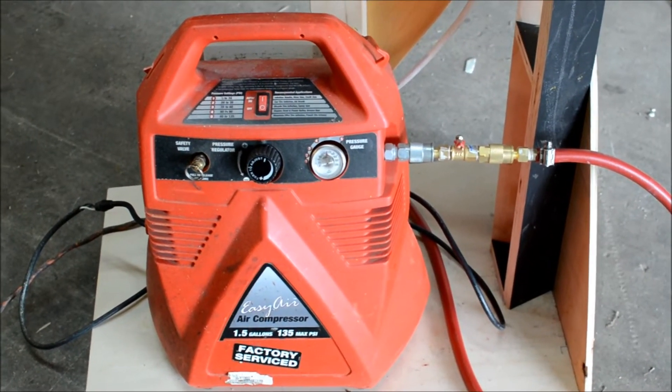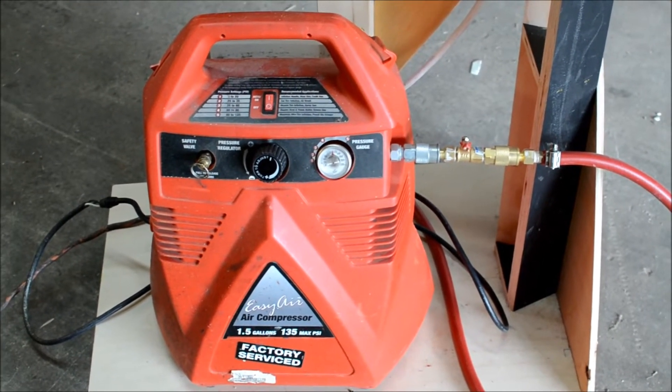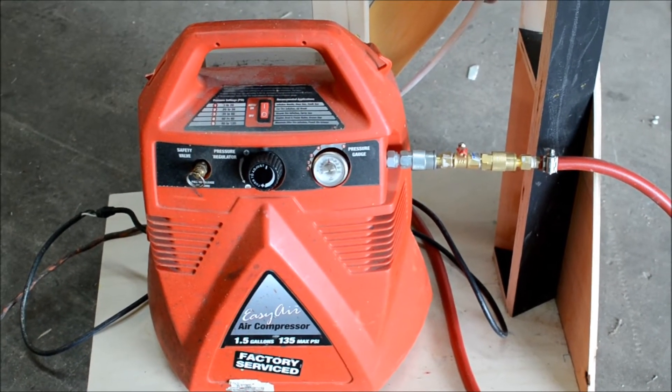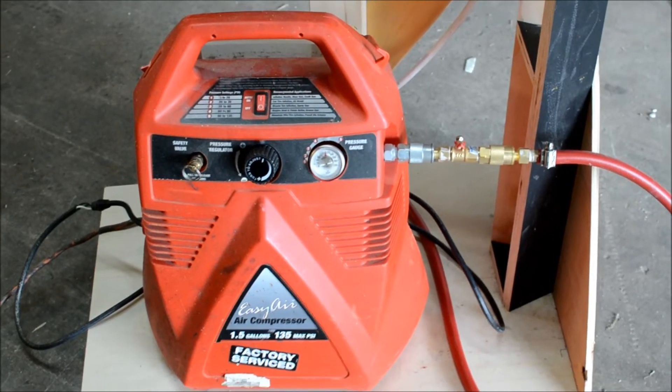An air compressor lives on the bottom of the blood cannon. It's charged up to about 100 psi before the show and then it's switched off and unplugged so that it doesn't accidentally trigger during the show.